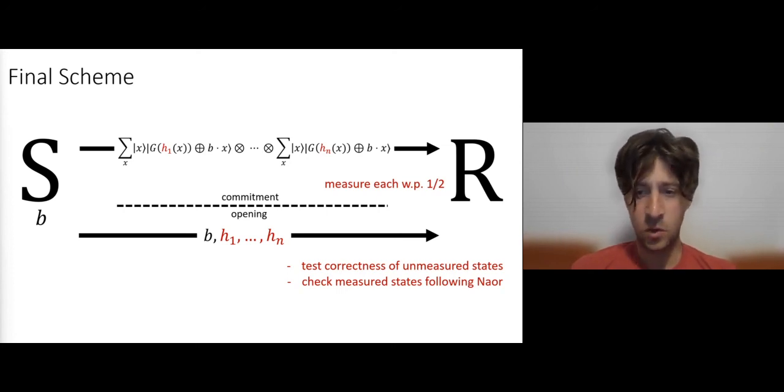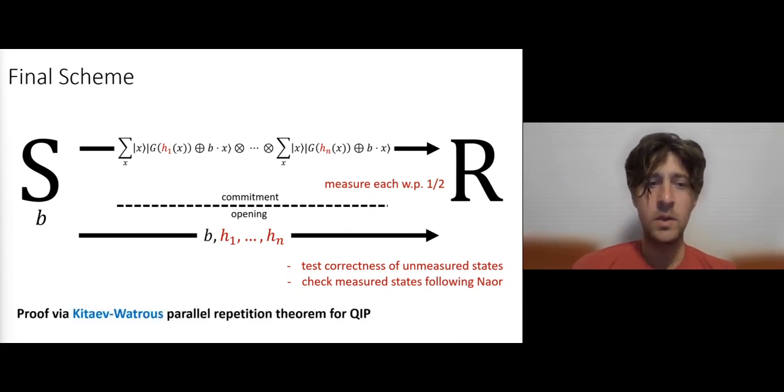And what's going on here intuitively is that the correctness test for a random subset of these commitments essentially ensures that many more commitments were properly structured. And having measured them, Naor binding would kick in. So formalizing this, of course, requires care because in an adversarial commitment, all of these parallel commitments are really going to be entangled and we don't know exactly how. And the way we formally prove this is by a reduction to quantum interactive proofs, where we can basically invoke a general parallel repetition theorem for quantum interactive proofs by Kitaev and Watrous. The last thing I want to note about it is that, in fact, the commitment itself is perhaps quantum, but the decommitment is completely classical. And this is another advantage that this commitment has over previous quantum proofs.